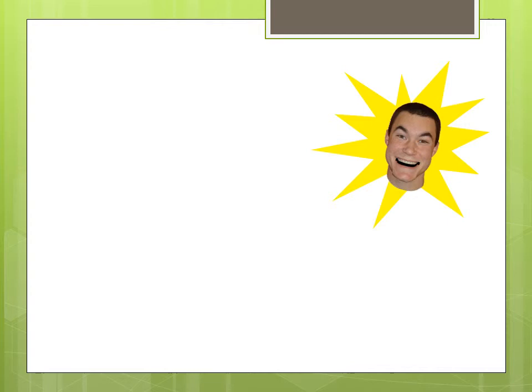Let's prove this using mathematical induction. If we have zero dots, we can draw zero lines. Zero times zero minus one over two equals zero — zero equals zero! This is our basis case.